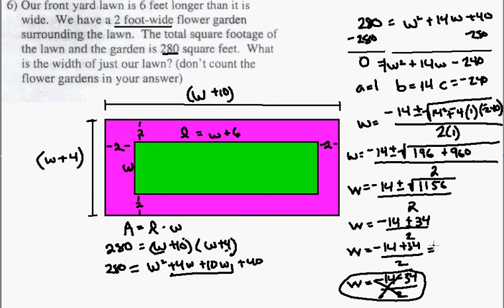So, if I take negative 14, plus 34, I get 20, over 2, with the answer of the width being 10. So, what is the width of just our lawn? The answer is 10 feet. Done.